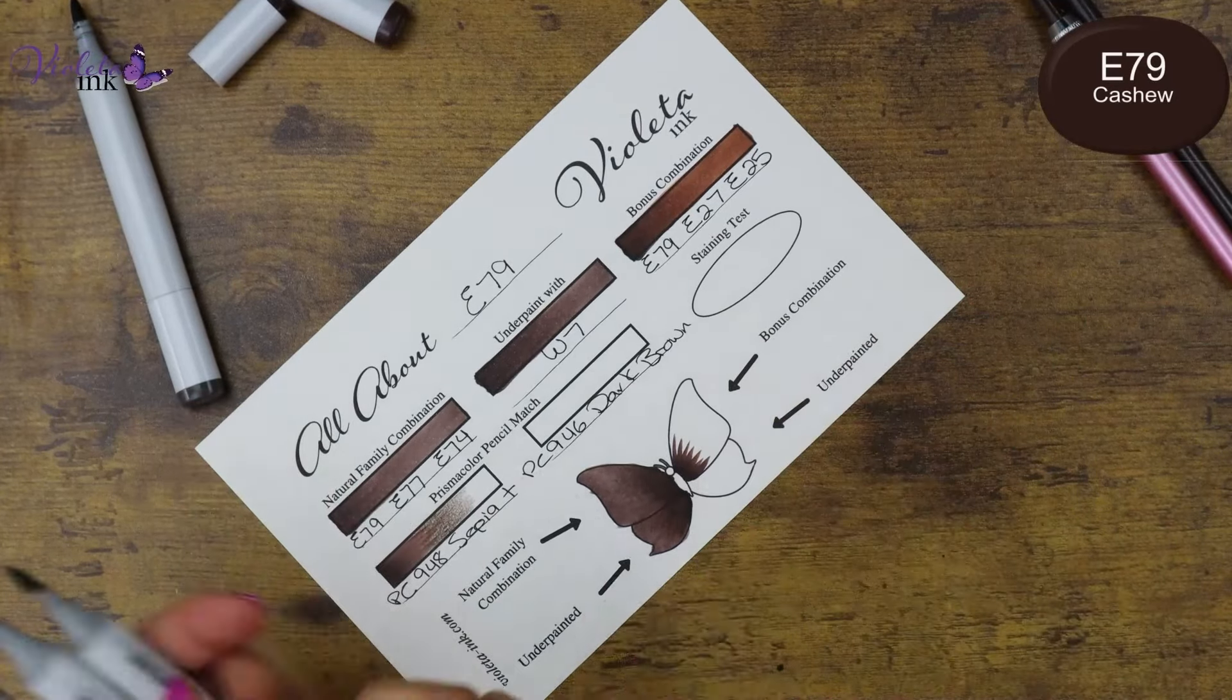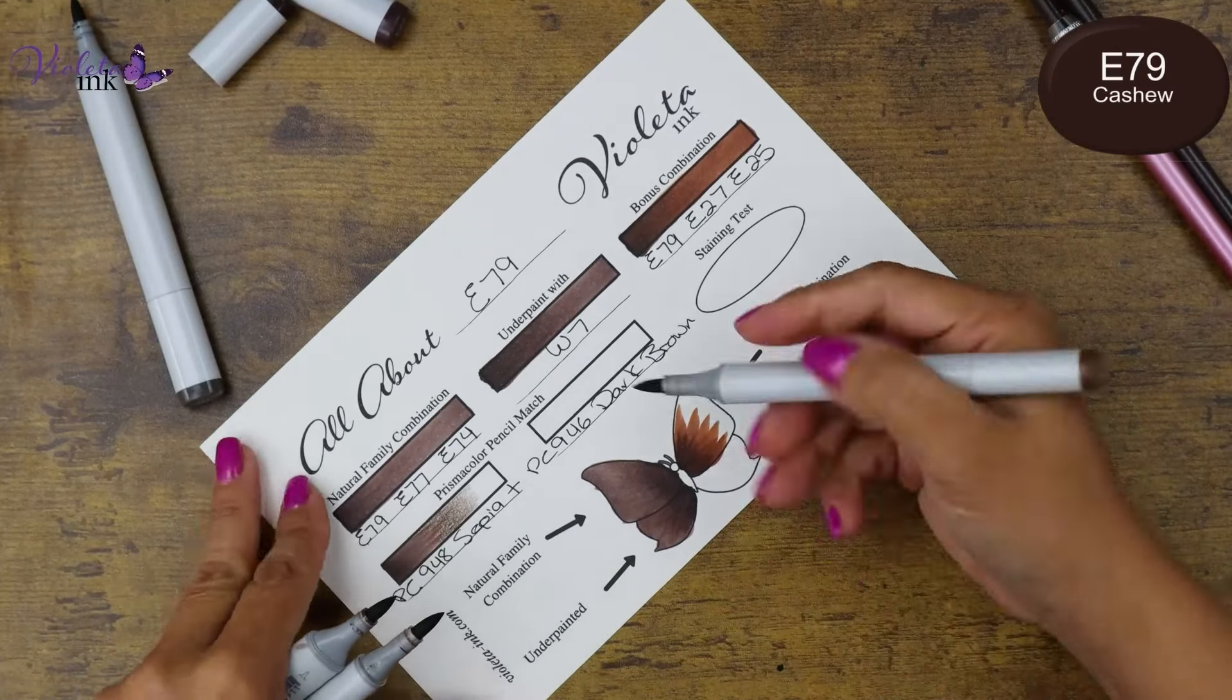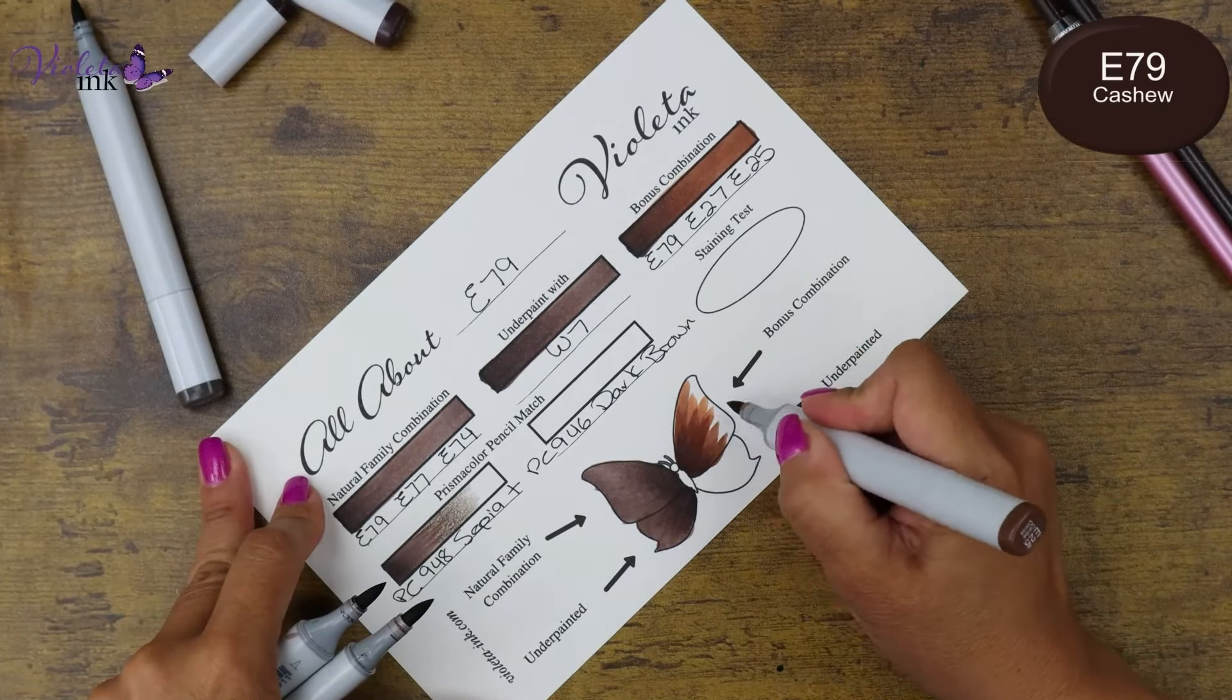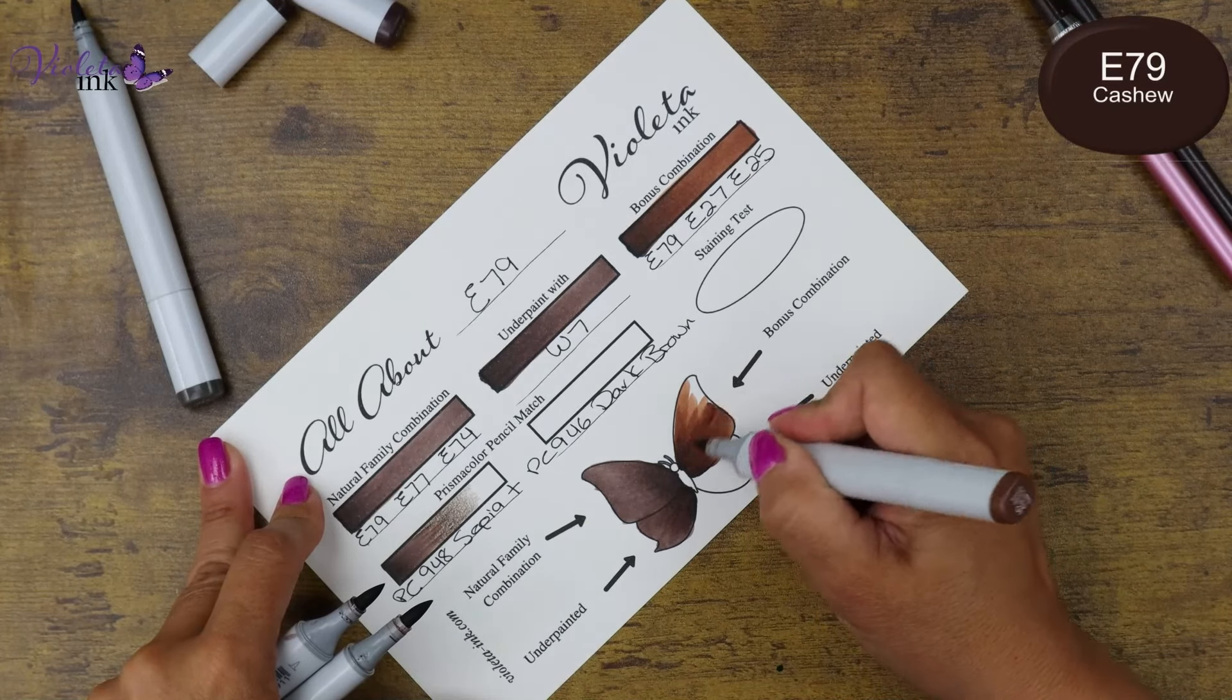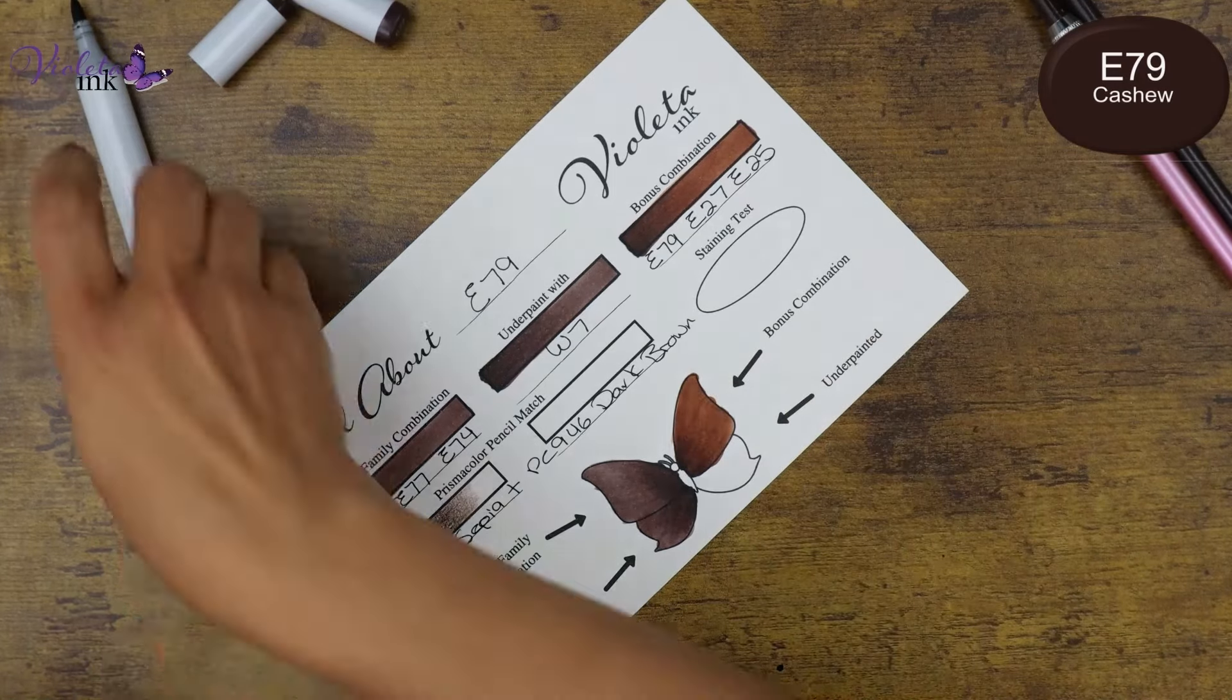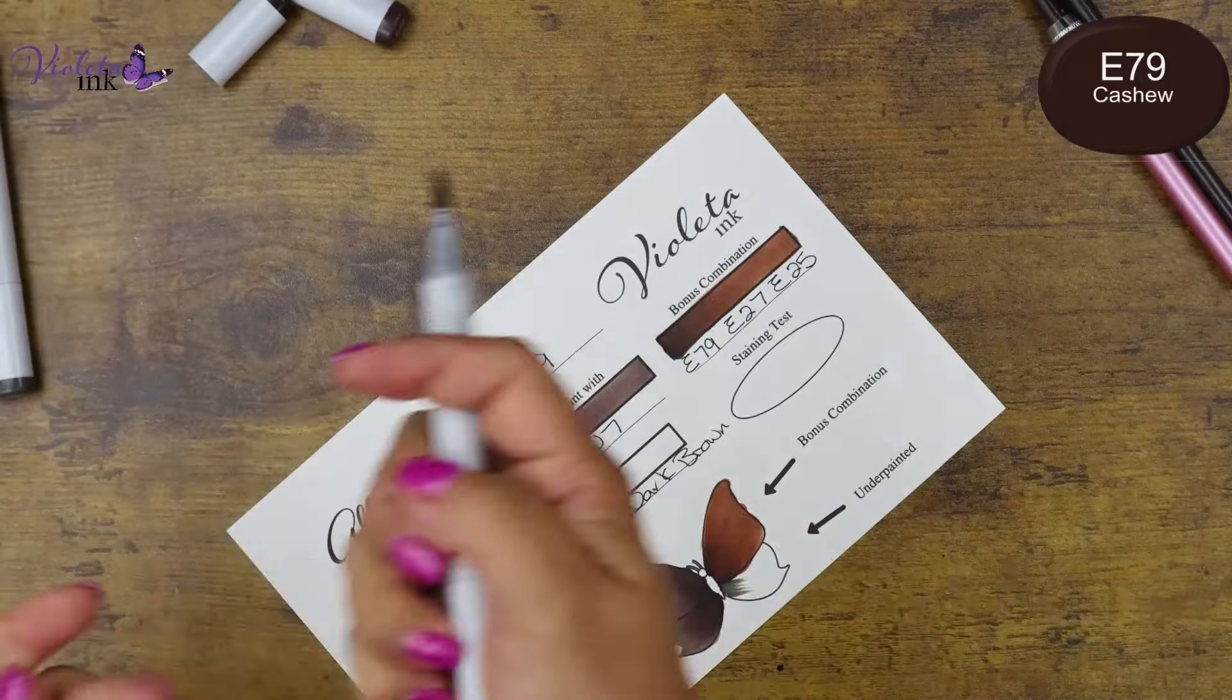This is E79, E27 and E25. E79, the natural family combination looks kind of dry, not very fun. But the chocolate one, that one is super cute.